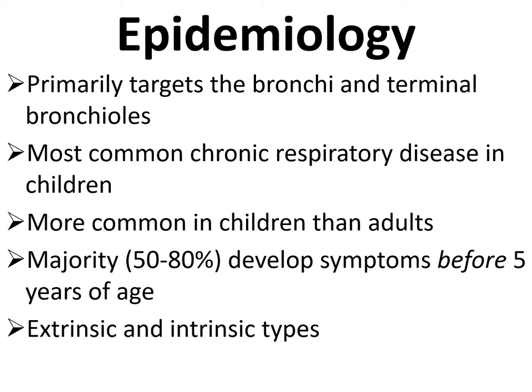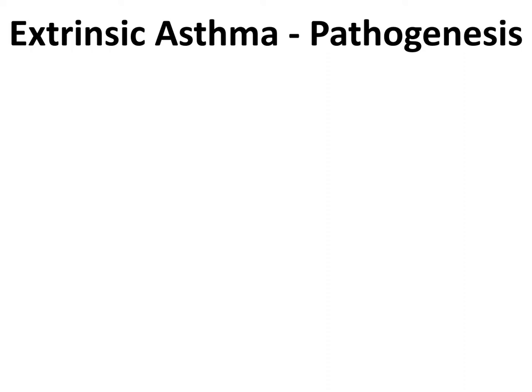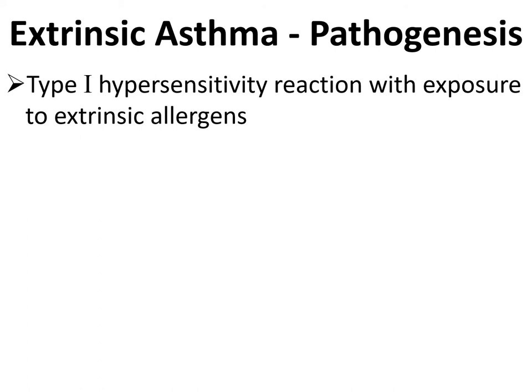There are two types of asthma: extrinsic and intrinsic. Extrinsic asthma is developed by a type 1 hypersensitivity reaction with exposure to extrinsic allergens — pollutants, pollen grains, drugs, and various xenobiotics — which elicit an immunological reaction by generating reagenic IgE antibody. This IgE gets deposited on the mast cells, and after a latent period, re-exposure to the same antigen causes an antigen-antibody reaction, precipitating the type 1 hypersensitive reaction.